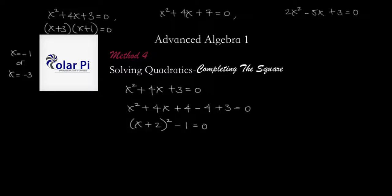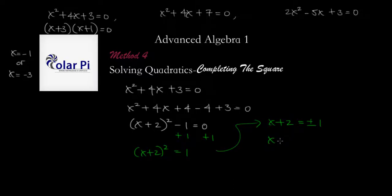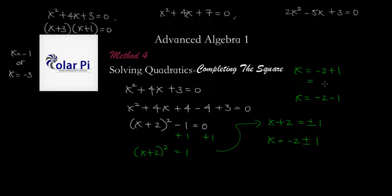To solve, we add 1 to both sides, getting (x+2)² = 1. Then we take the square root of both sides: x + 2 = ±√1, which is ±1. Finally, subtract 2 from both sides: x = −2 ± 1. That gives two answers: x = −2 + 1 = −1, and x = −2 − 1 = −3. Those are consistent with the two answers we had from the factoring method.